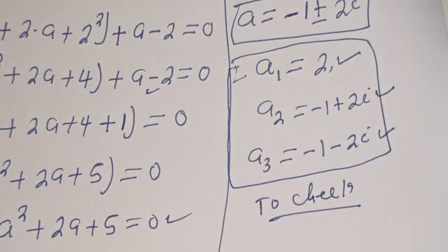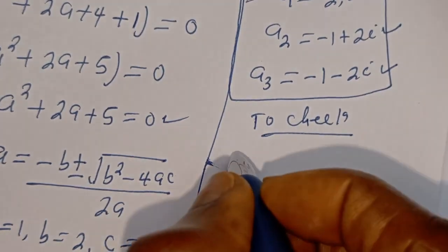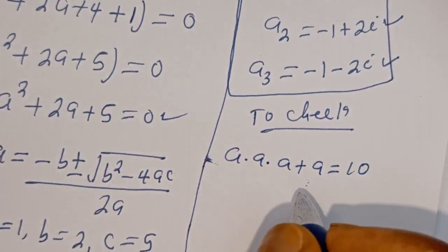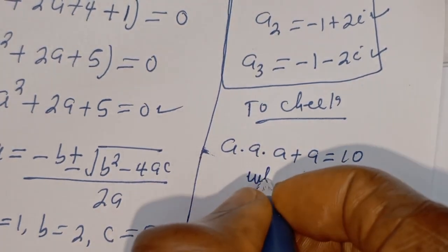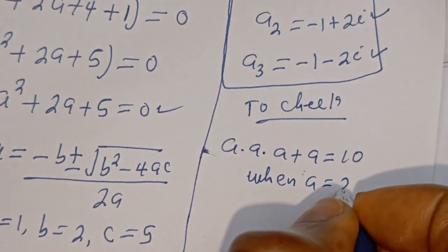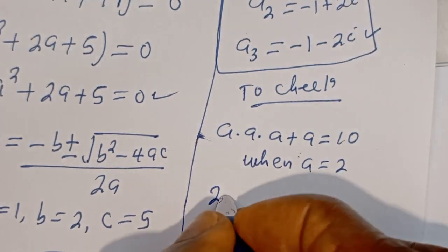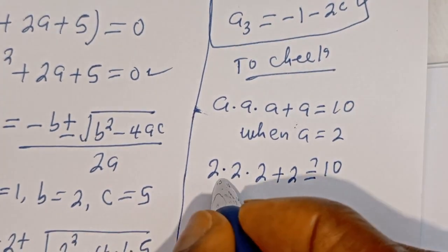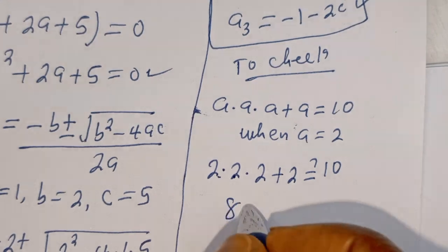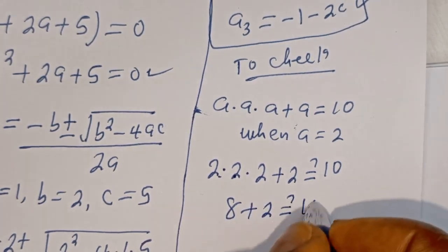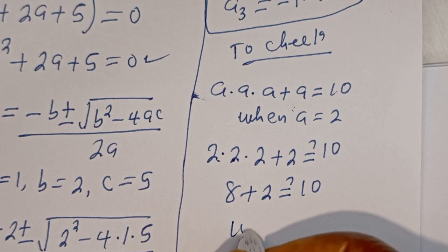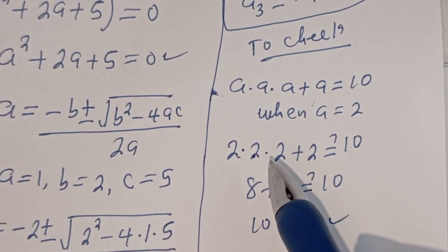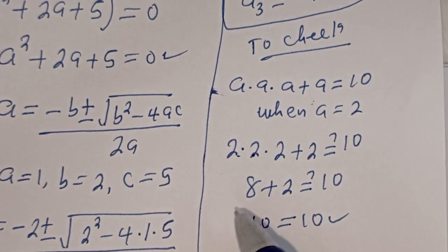Let's check to confirm if the answer is right. When A is equal to 2, the only real root, we have A multiplied by A multiplied by A plus A must equal 10. So 2 times 2 times 2 plus 2: that is 4 times 2 equals 8, plus 2 equals 10, which is true at A equals 2. I hope you enjoyed the video, thank you for watching — please don't forget to like, share, comment and subscribe to my channel. Bye.